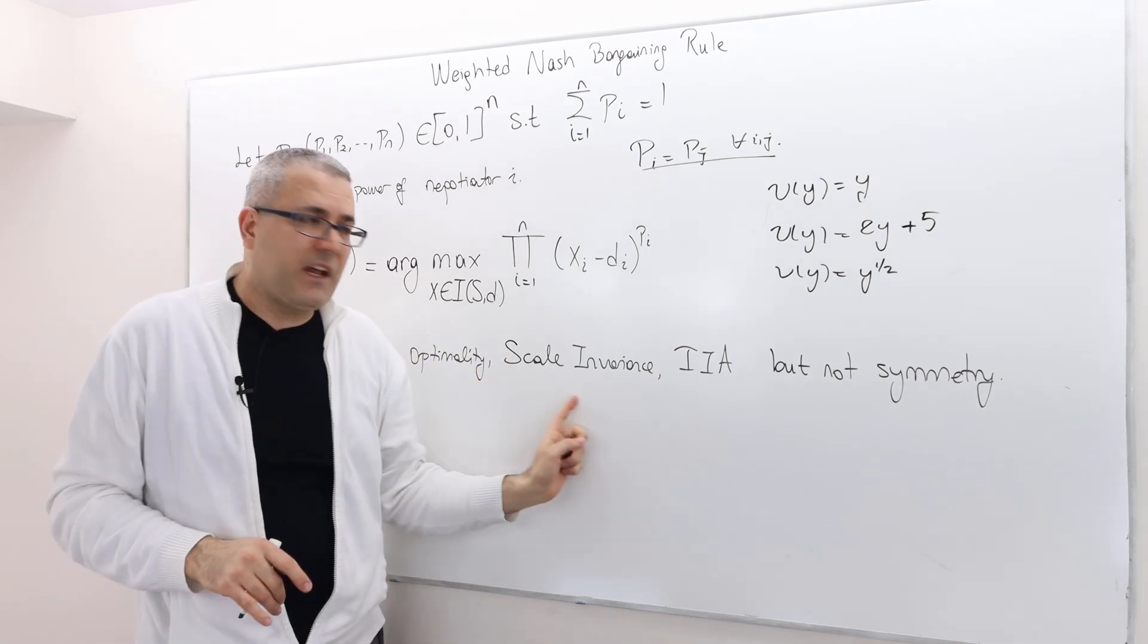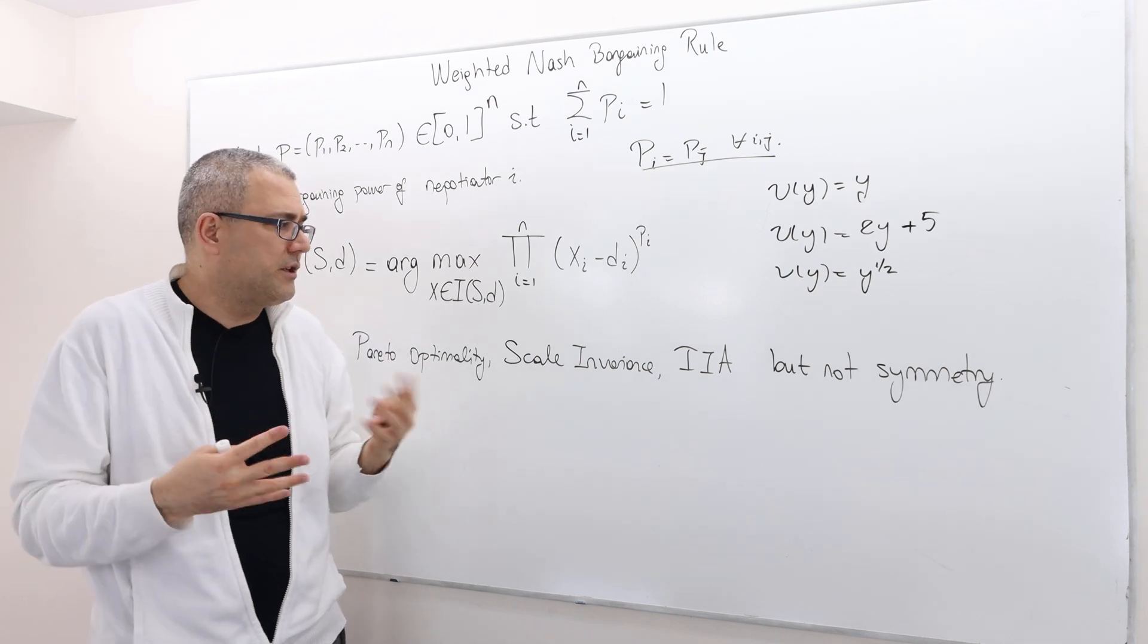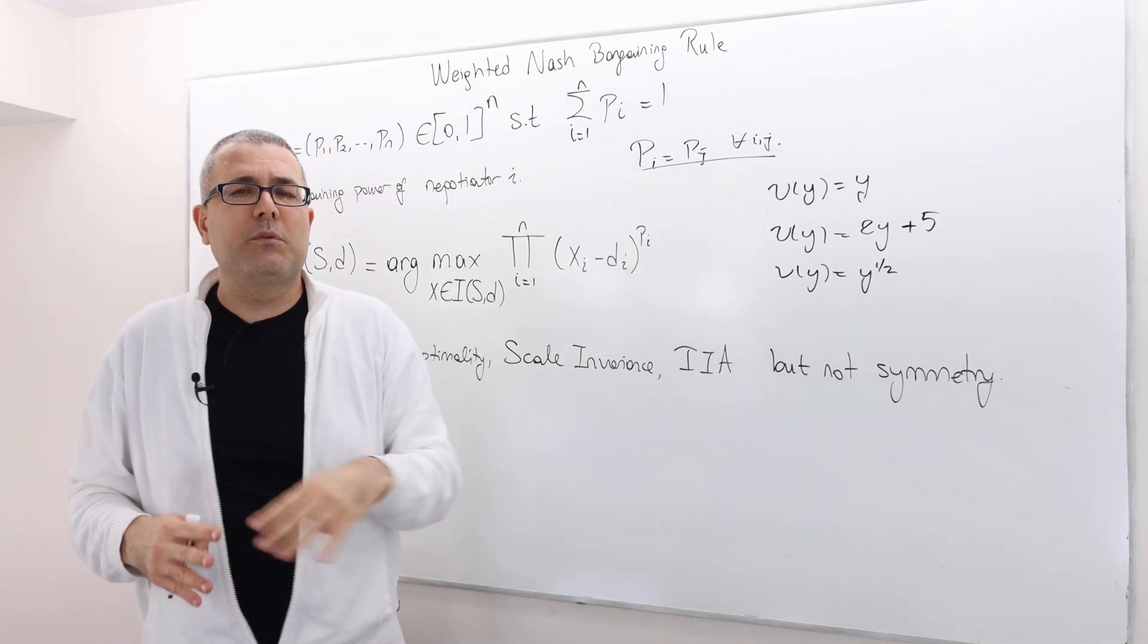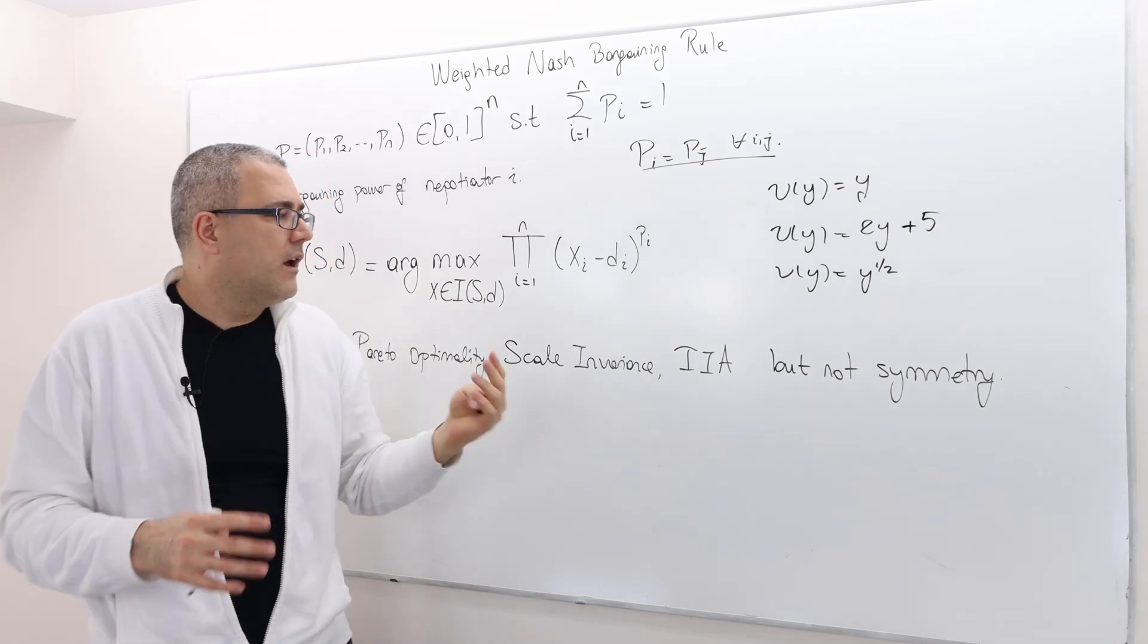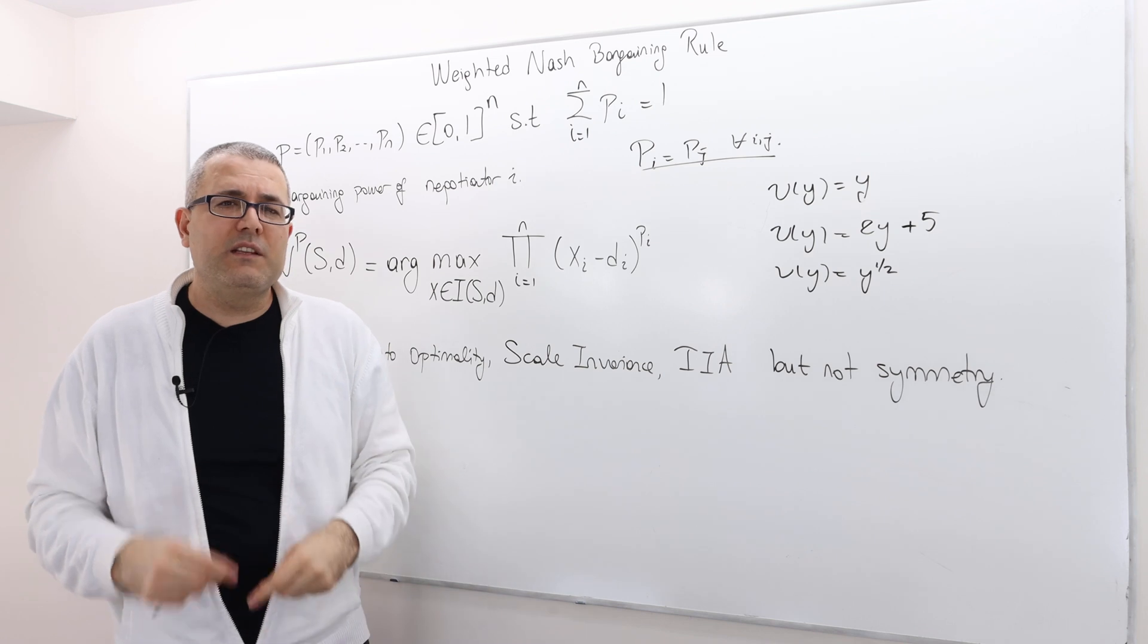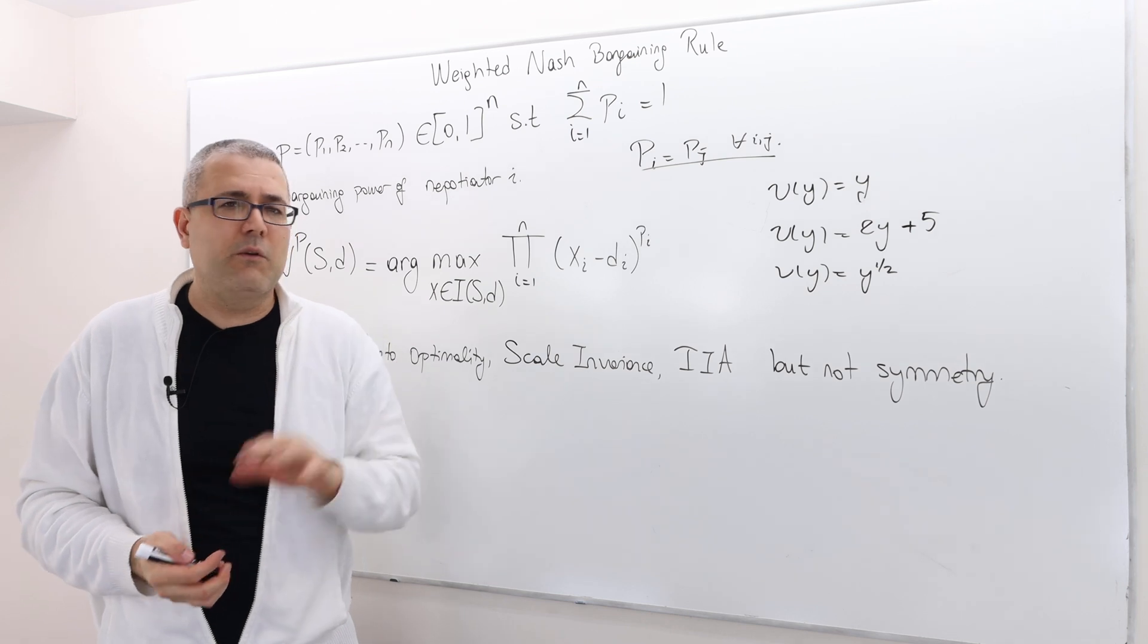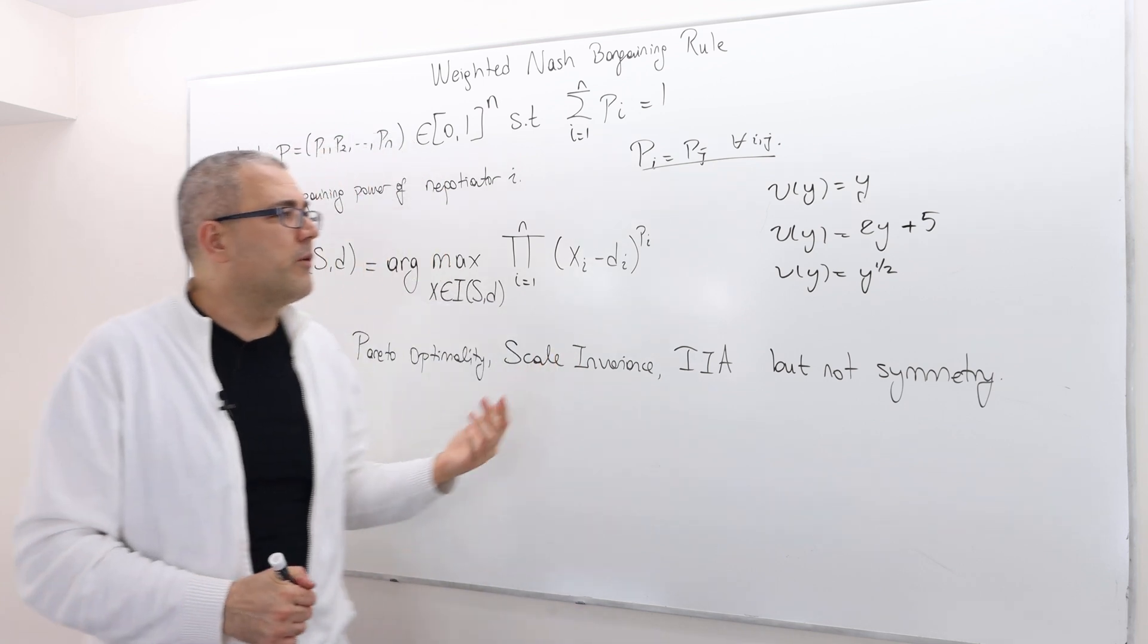So it satisfies scale invariance, which is an important property because it really doesn't matter whether players are multiplying each surplus by 2 or 5 or 10. So scale invariance is an important property. The other one is IIA, independence of irrelevant alternatives. So the irrelevant alternatives are not going to make any difference.